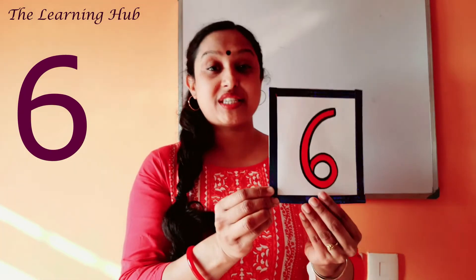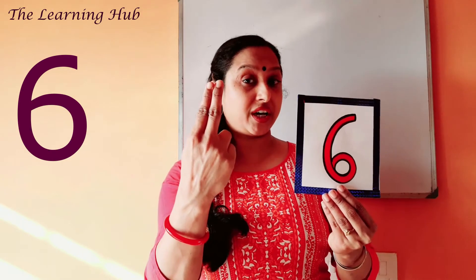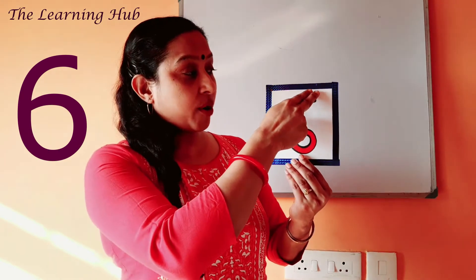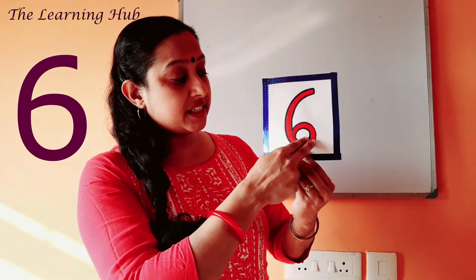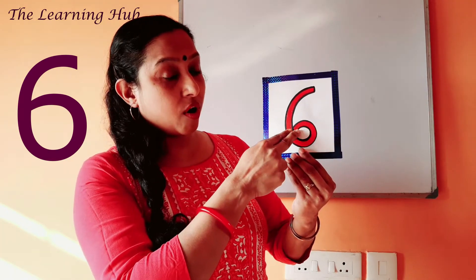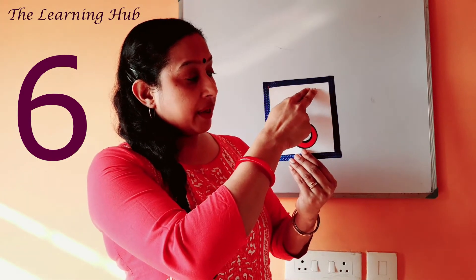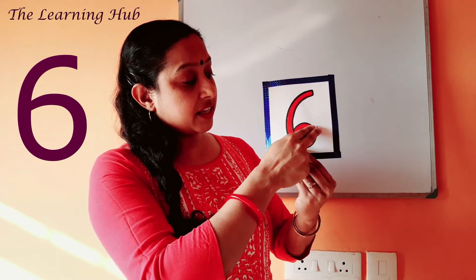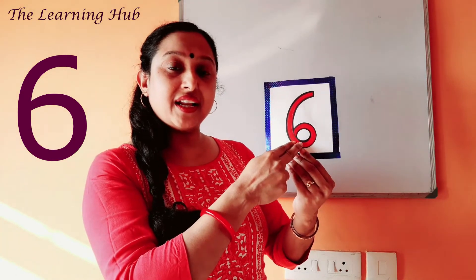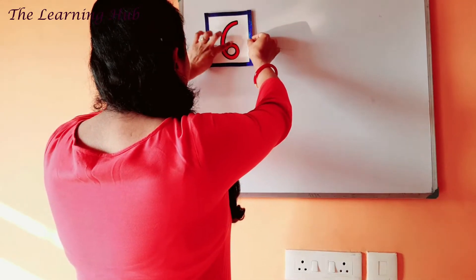Which number? Number six! Now it's time to do the formation. For that, everyone join these two fingers. Start from the top, then draw a curve to the left side, then turn, then draw a small circle. So this is the formation of number six.